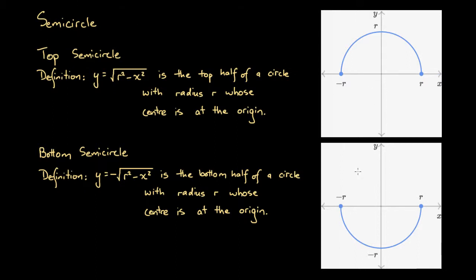Here we have two semicircles that are graphed, and we have two definitions for two different types of semicircles. The top one is called a top semicircle and the bottom one is called a bottom semicircle. In some textbooks you'll see upper semicircle or lower semicircle, or you'll see them referred to in other different ways. Either way, this top and bottom semicircle terminology is just what we're going to use in this video to help us distinguish between these two different types. We're going to look at the definitions of each and their graphical form.